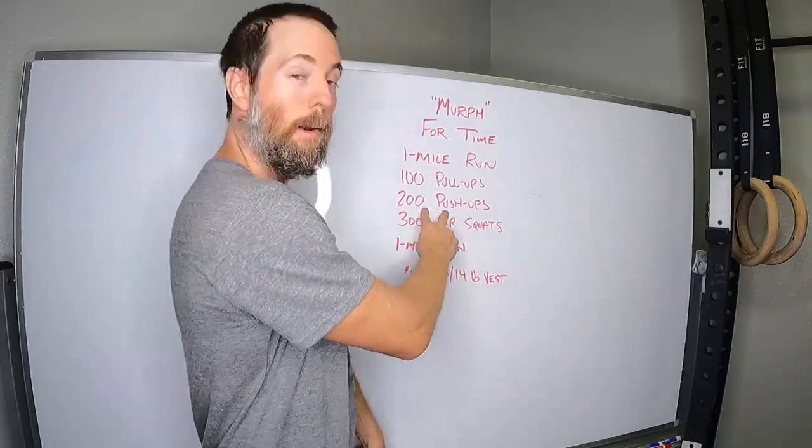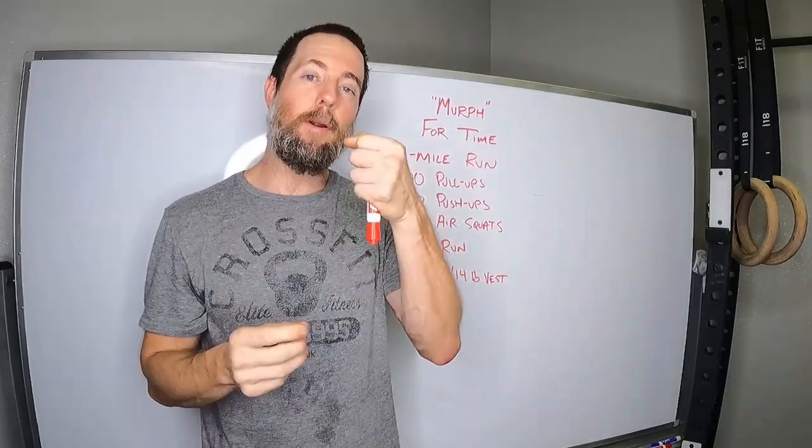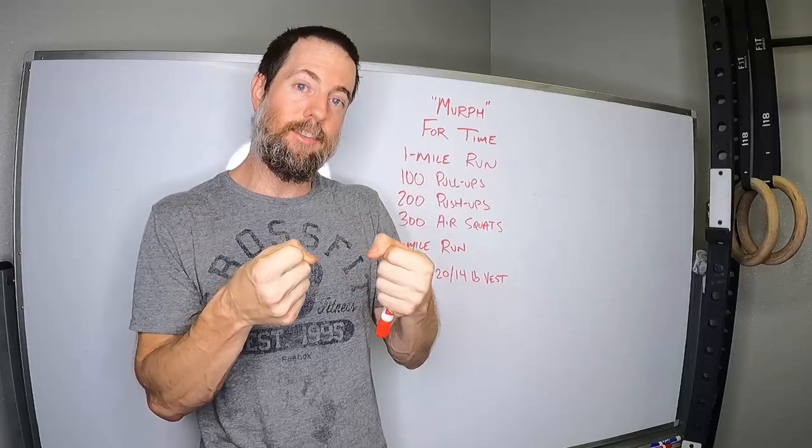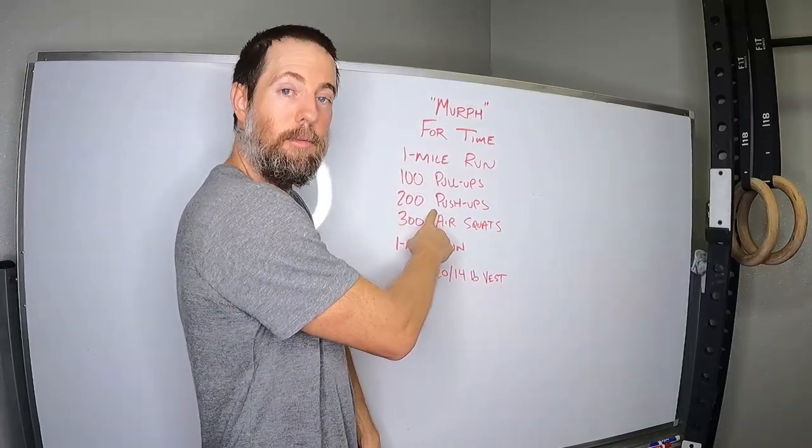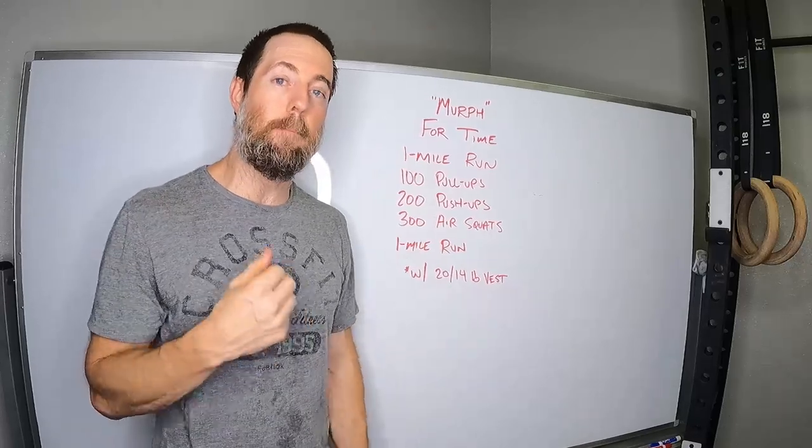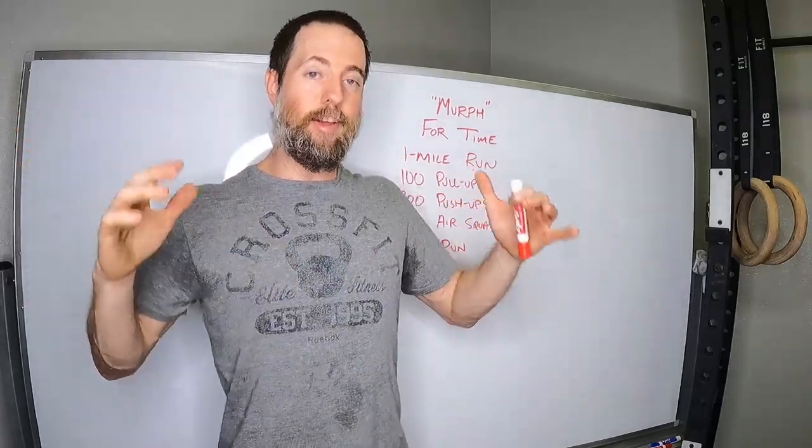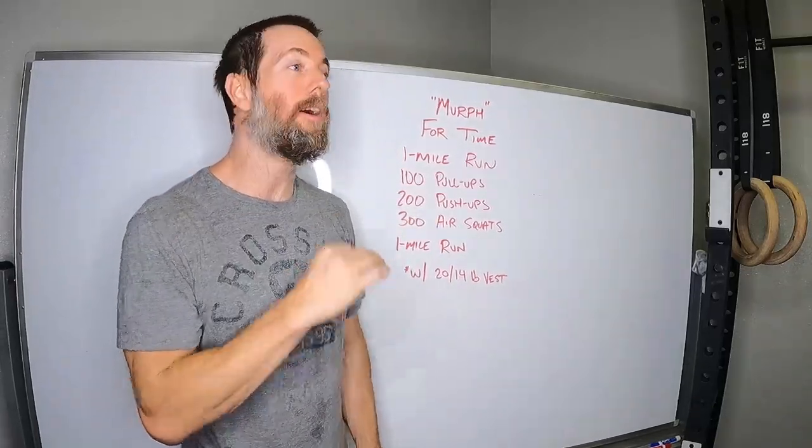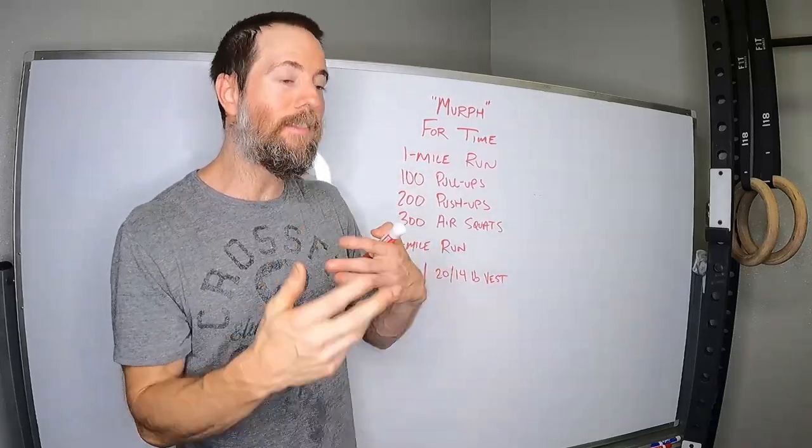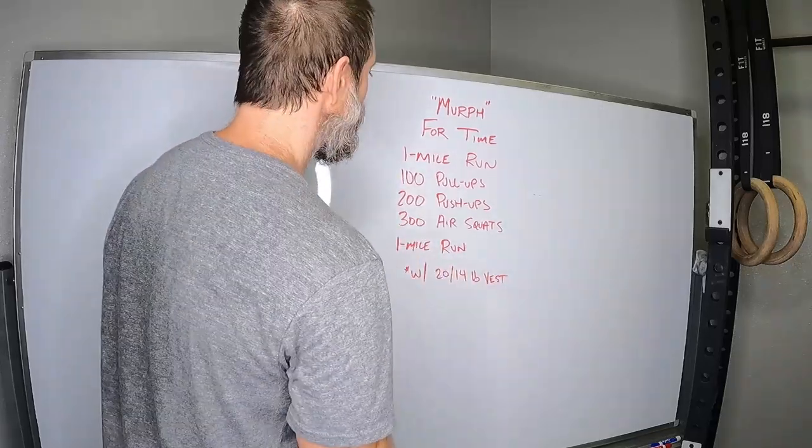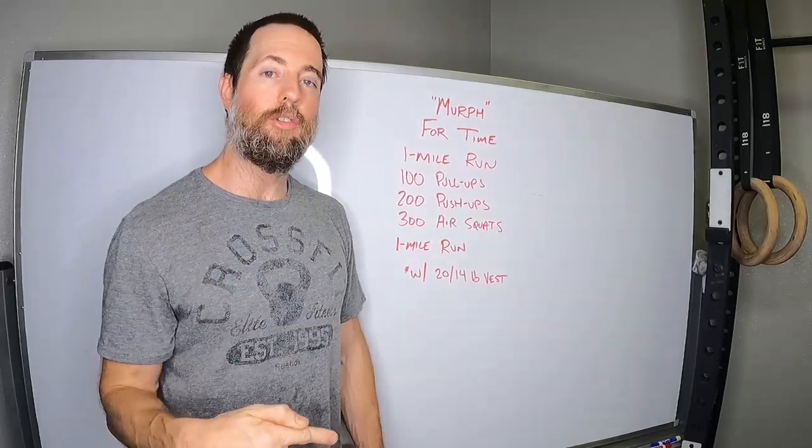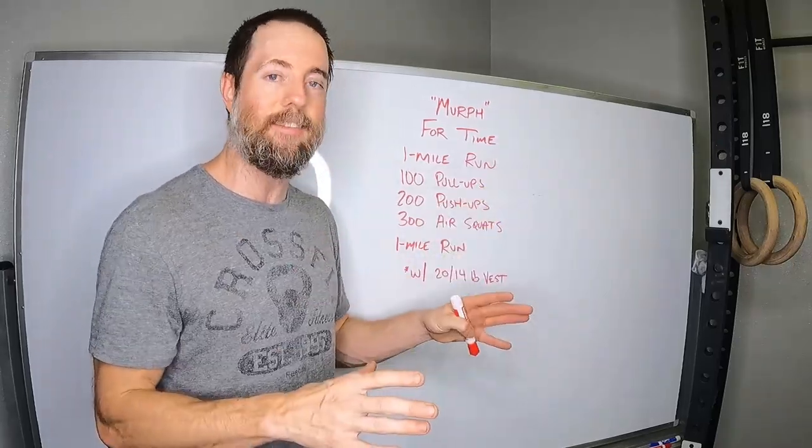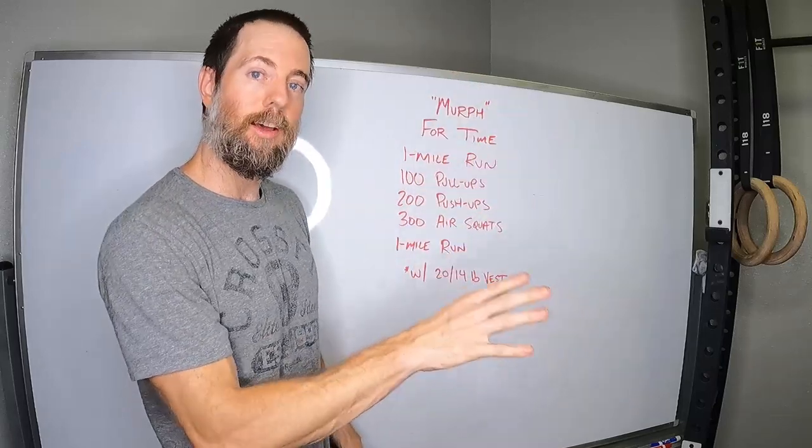If you take two people, exact same everything I talked about, and one person has way better push-up technique, but then you give them competition standards, it's no longer who has the best technique is going to be the most efficient. It's who's finding the best loopholes and the best ways to vary how they're doing it to get them through the task. So here's the key, when we are truly testing, we want to choose exercises in a way where they're not actual exercises. We want to choose tasks that mimic the real world.